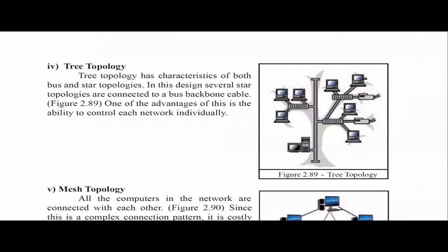Then comes tree topology. Tree topology is a combination of bus and star topologies — there is a backbone, and star networks are connected to the backbone. Each of these sub-networks can be easily managed separately, which is one of the main advantages since they are separated networks.